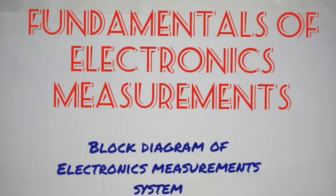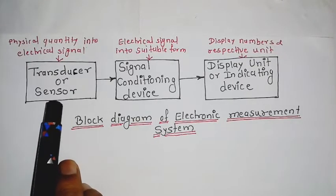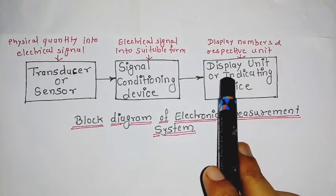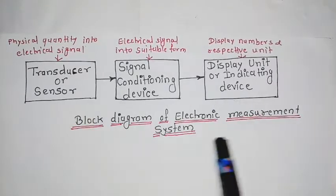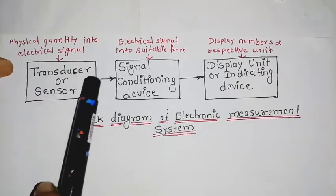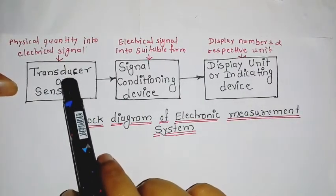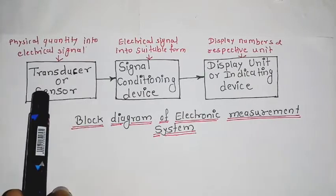Hello students, today we start the first unit of EMI subject, that is Fundamentals of Electronic Measurement. We will first see the block diagram of an electronic measurement system. This diagram shows which blocks are present: the transducer or sensor, signal conditioning device, and display unit or indicating device.